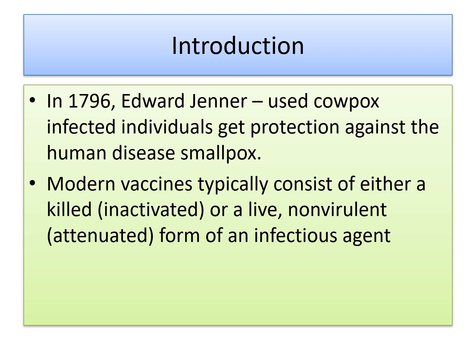Going into vaccines, we should know something about the origination and background of vaccines. In 1796, Edward Jenner, who is the pioneer in the vaccination program and is called the father of vaccination, used cowpox virus as a vaccination program against smallpox. He used cowpox-infected individuals to get protection against the human disease smallpox, and from that, the vaccination program picked up and started in different directions.